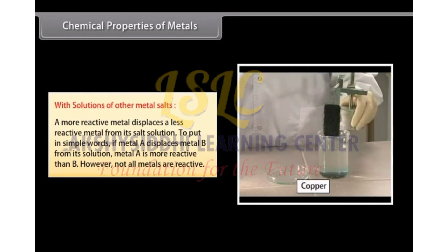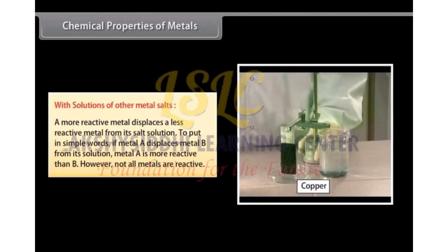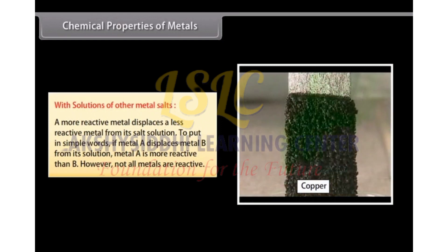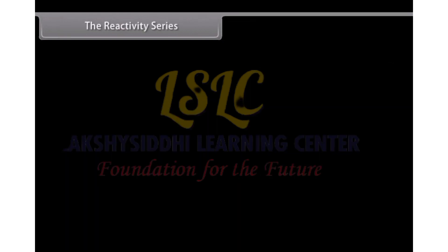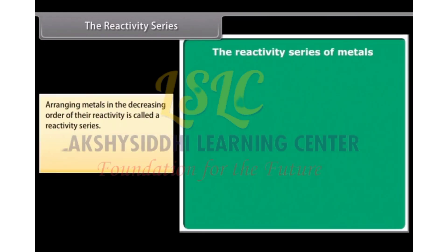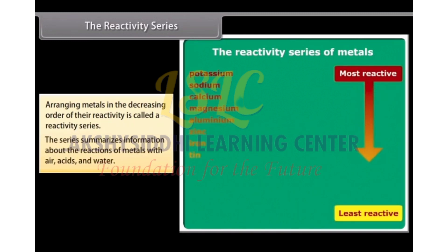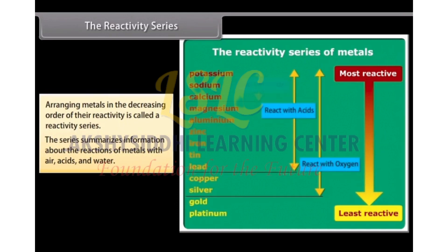However, not all metals are reactive. In this reaction, the copper contained in the copper sulfate is replaced by zinc. The reactivity series: Metals being arranged in the decreasing order of their reactivity is called a reactivity series. It is used to summarize information about the reactions of metals with air, acids and water.